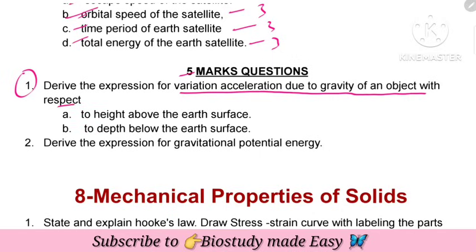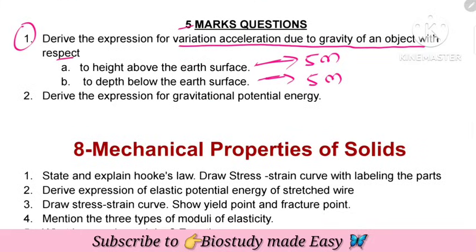Five-mark question: derive the expression for variation of acceleration due to gravity with height above the earth's surface and depth below the earth's surface — these are separate 5-mark questions. Also, derive the expression for gravitational potential energy.